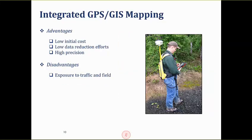The integrated GPS and GIS mapping method is a bit more advanced. Now you have GPS combined with a GIS mapping system — a computer or handheld device. When you see highway features, you can directly input them into the computer and record both the exact location and the feature description on the spot. It's considered low cost and high precision. But the problem is similar to field inventory — it's exposed to traffic and affected by weather conditions.